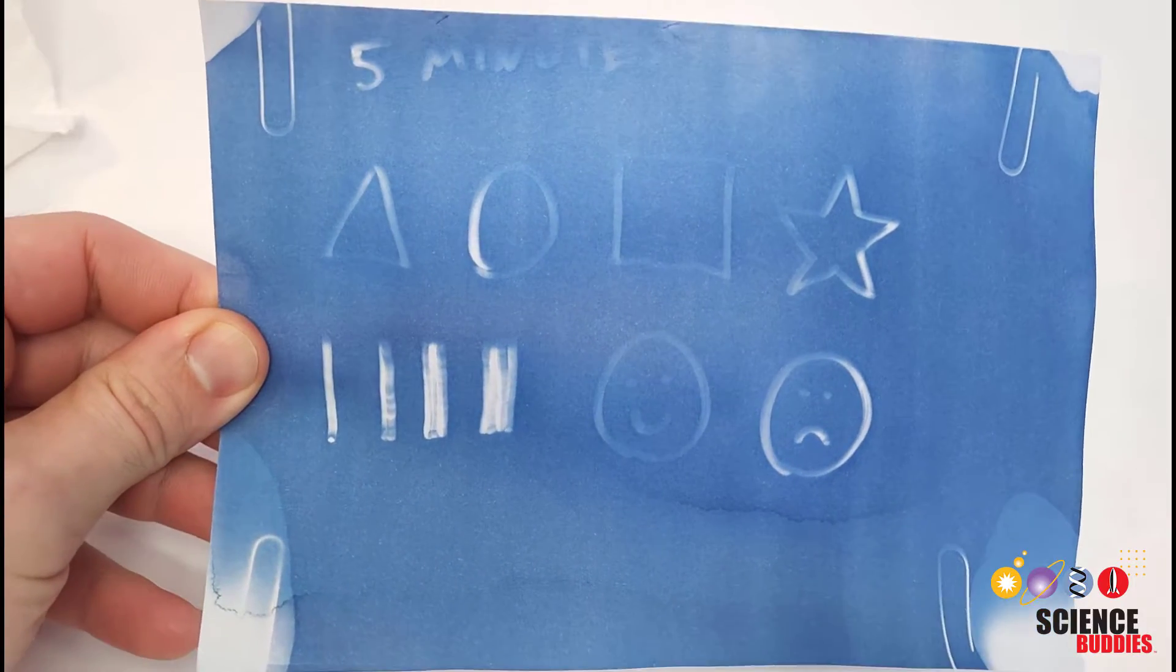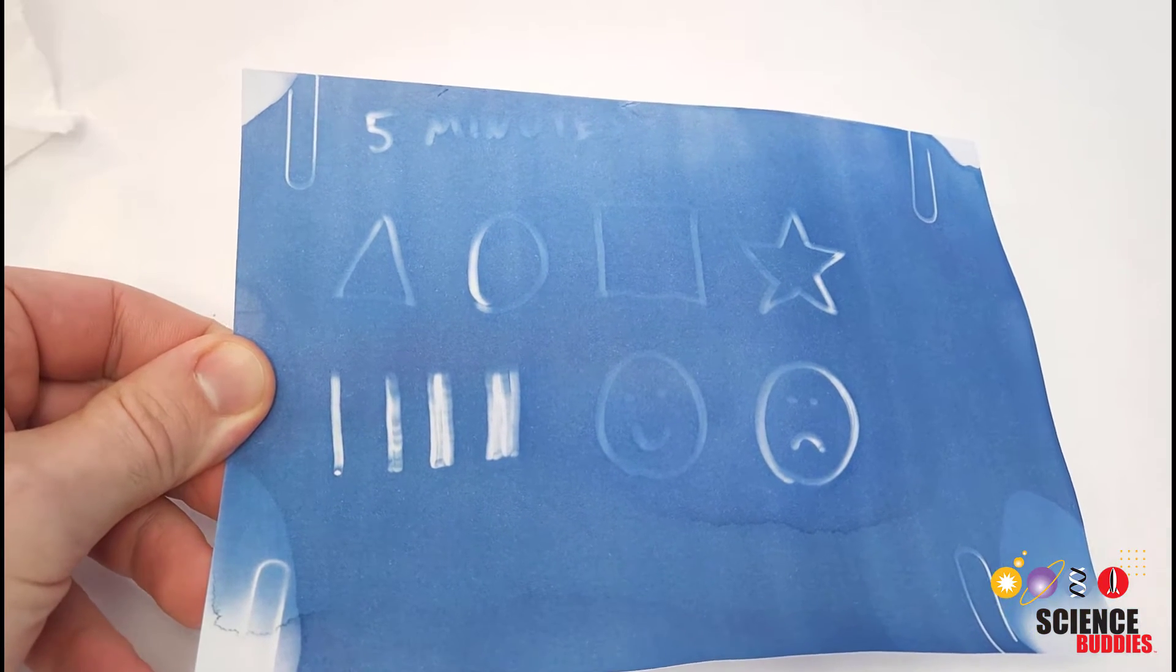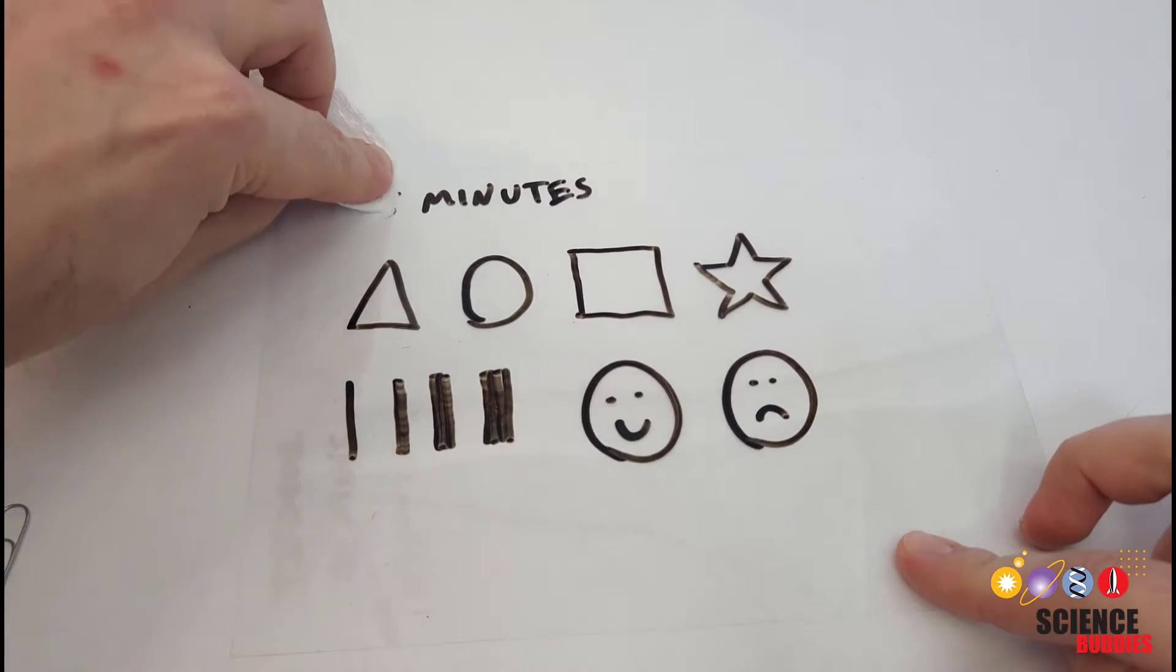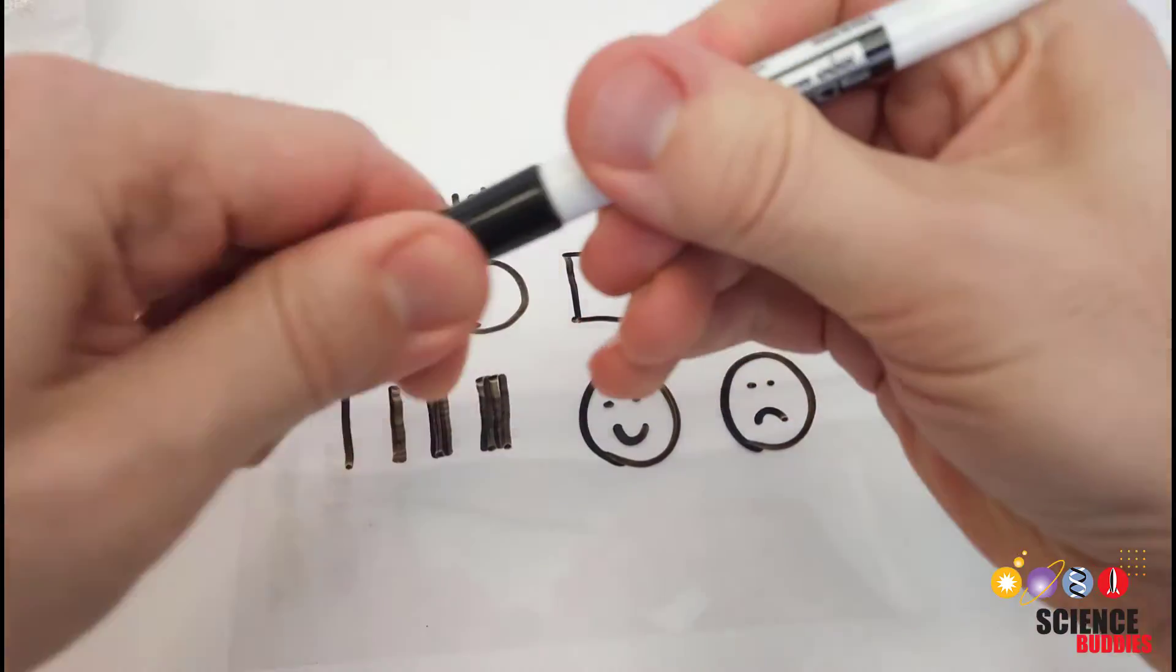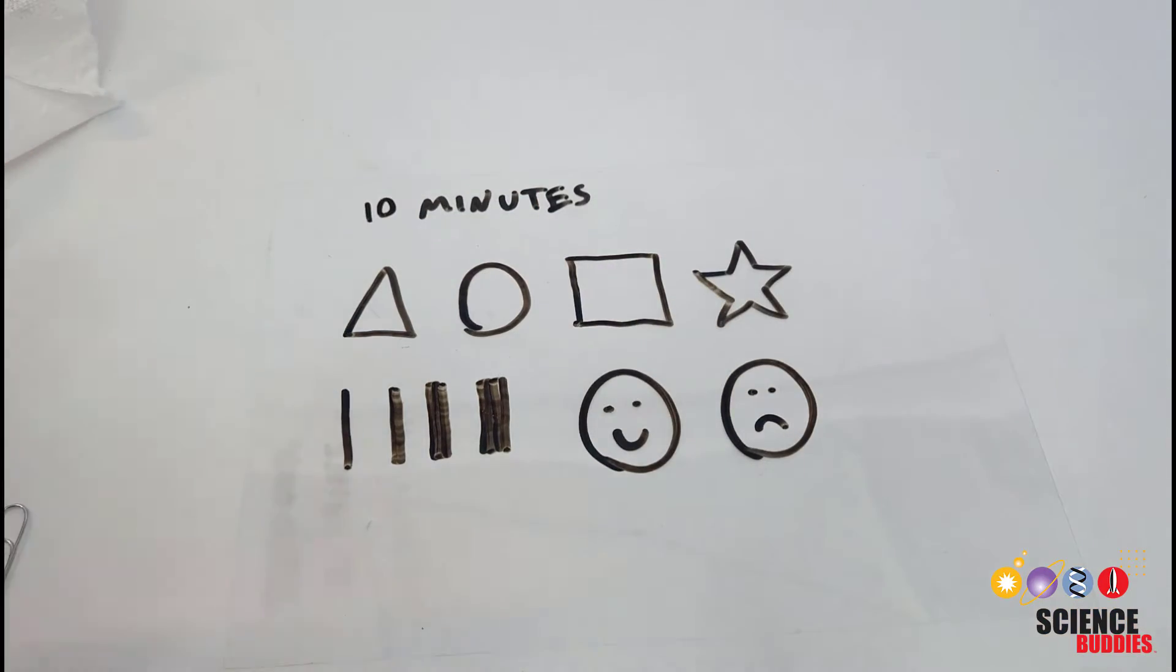Look at the quality of your results—how well the different shapes transferred from the transparency sheet to the photo paper. For a science project, you can experiment by changing the exposure time and find the optimal duration to avoid under or over exposure.